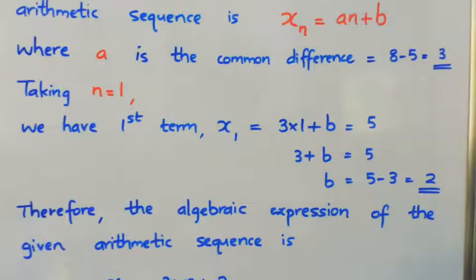Taking n = 1, we have the first term x1 = 3(1) + b = 5. That is, 3 + b = 5, so b = 5 - 3 = 2.